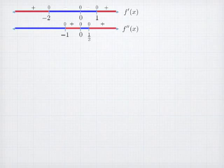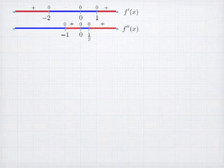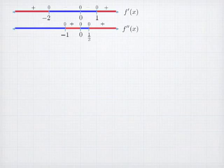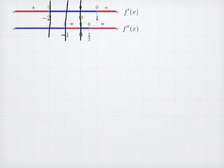Let's now look at an example of sign analysis. Here I have two number lines — one for the first derivative and one for the second derivative — and on each number line I've marked where the derivatives are positive, negative, and zero. Our goal is to look at these two number lines and determine where my function is increasing, decreasing, concave up, or concave down, generate the four basic shapes, and put them together to create our actual function.